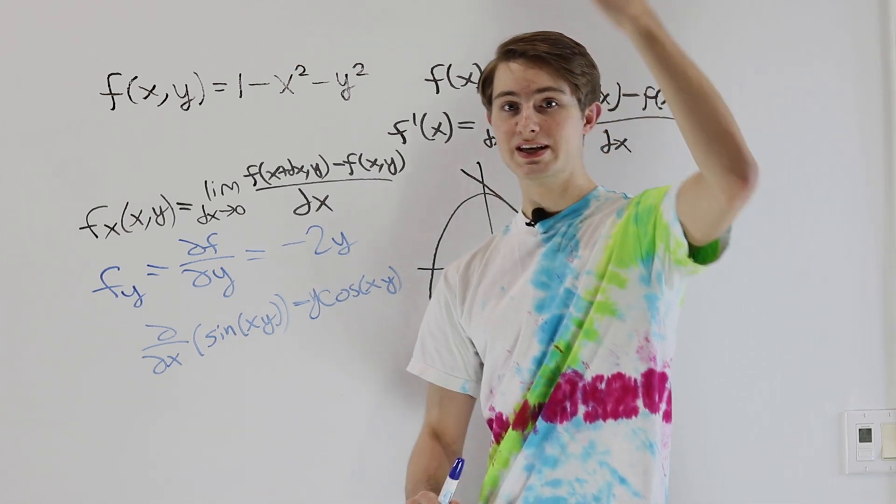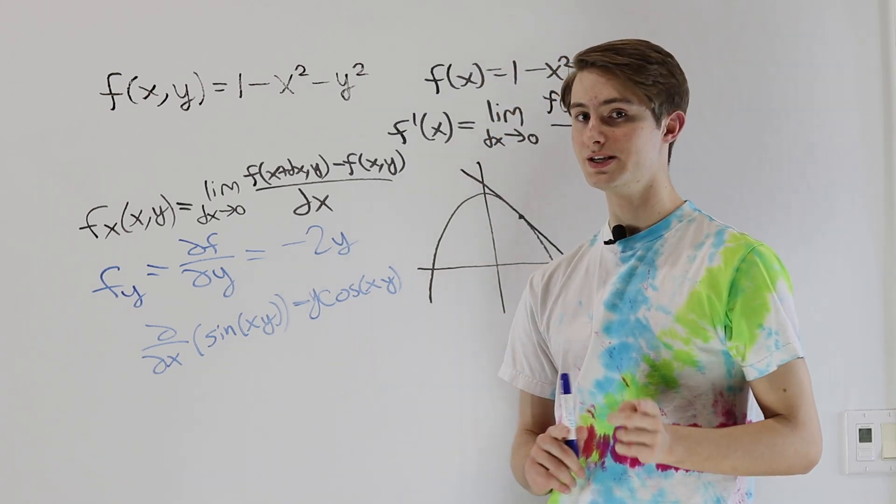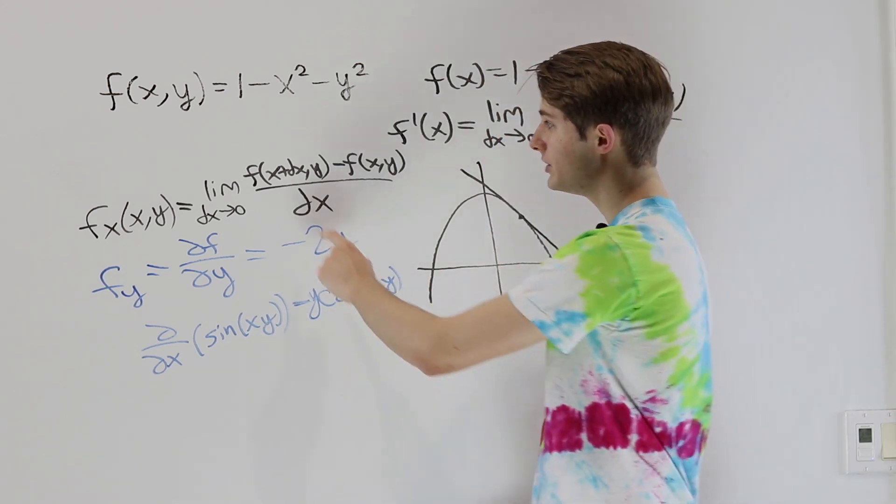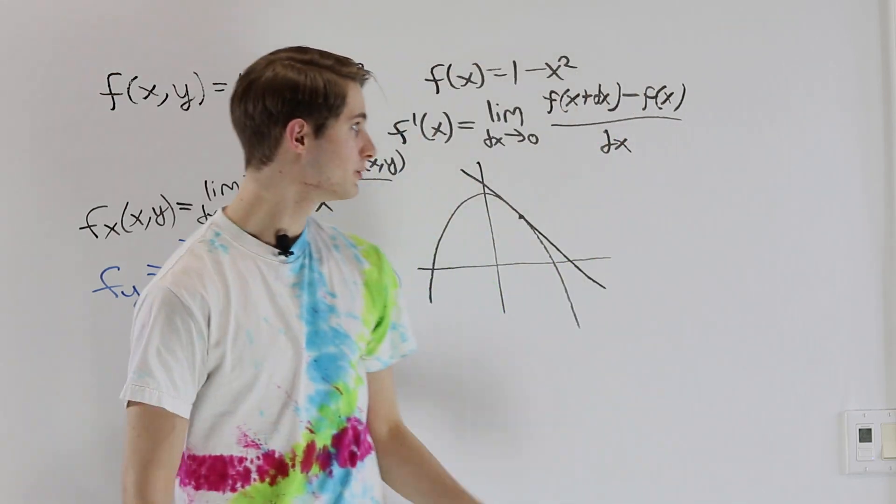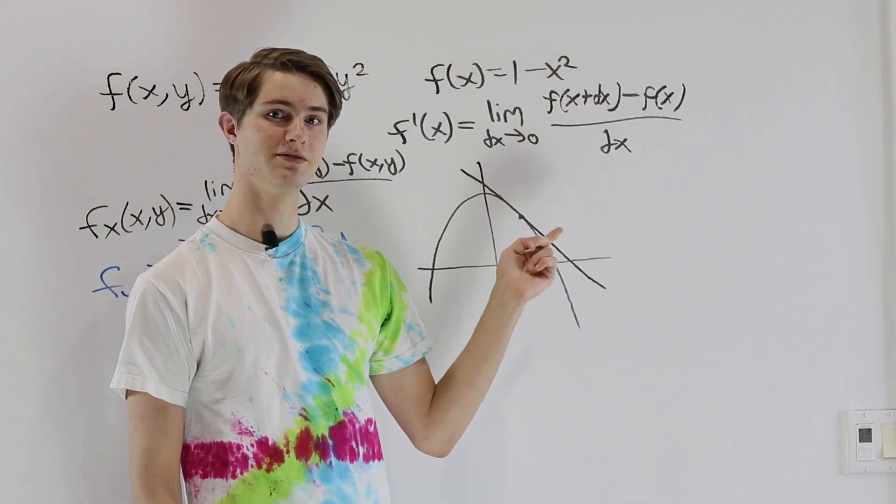We look at our 3D graph, we take a two-dimensional slice where one of the inputs is constant, and then we look at changes in the other input, just like we would with an ordinary derivative.